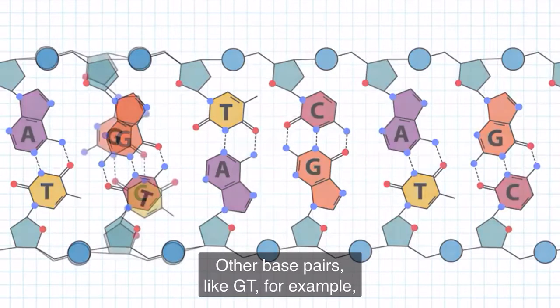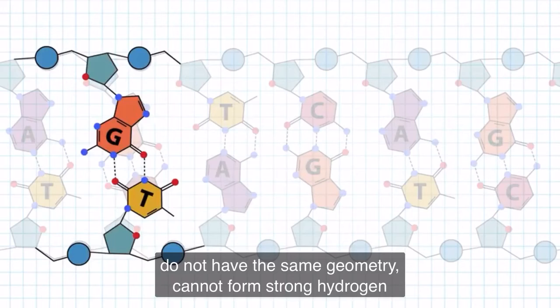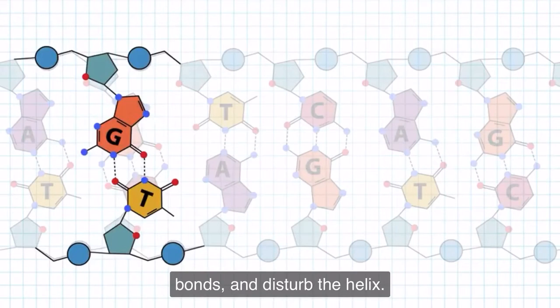Other base pairs, like GT for example, do not have the same geometry, cannot form strong hydrogen bonds and disturb the helix.